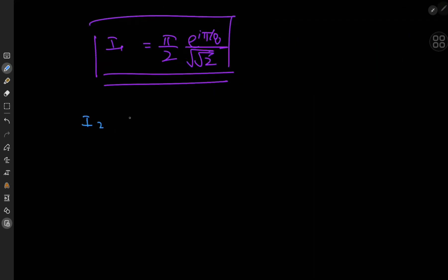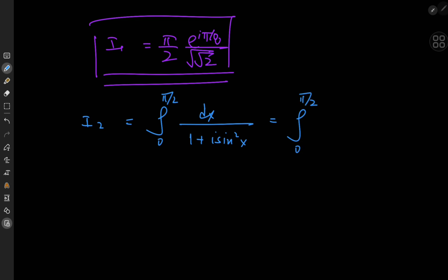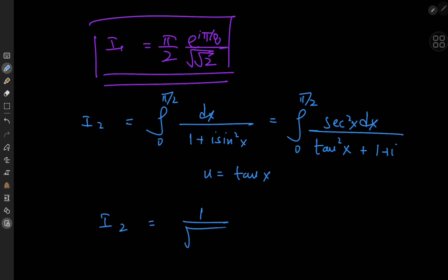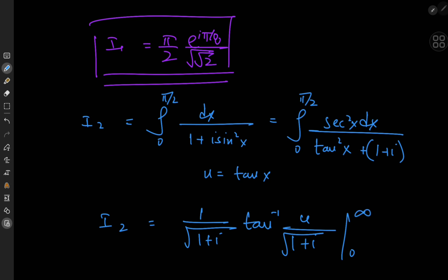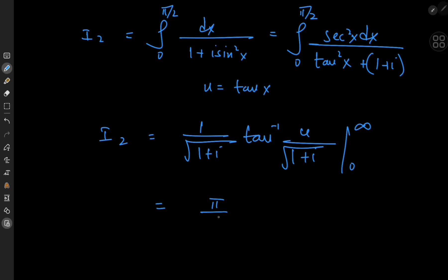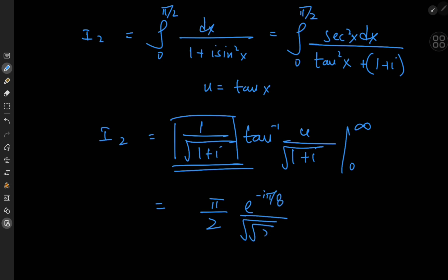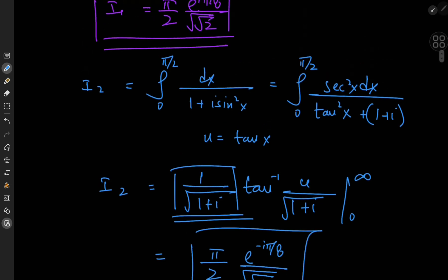Now for I₂, defined as the integral from 0 to π/2 of dx divided by 1 plus i·sin²x. After the phase shift and expanding by the squared secant function, we get sec²x dx divided by tan²x plus 1 plus i. After the same substitution, we get I₂ equal to 1/√(1 plus i) times arctan(u/√(1 plus i)), evaluated from 0 to infinity. This gives π/2 times e^(−iπ/8) divided by ⁴√2.